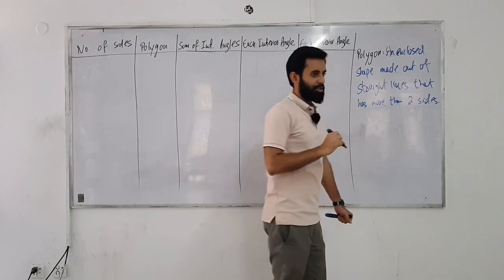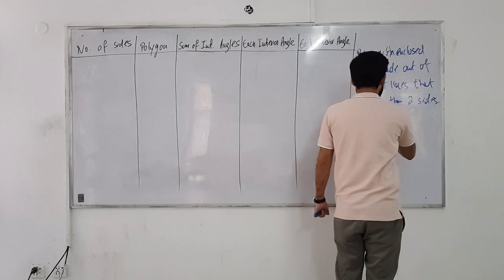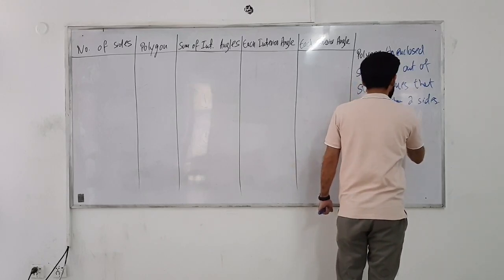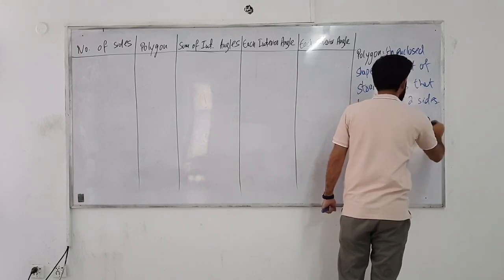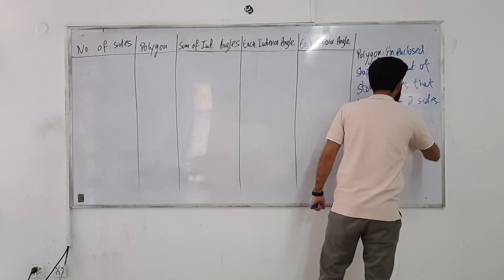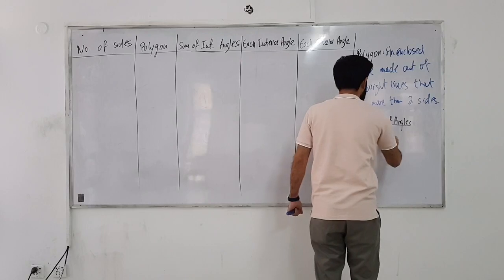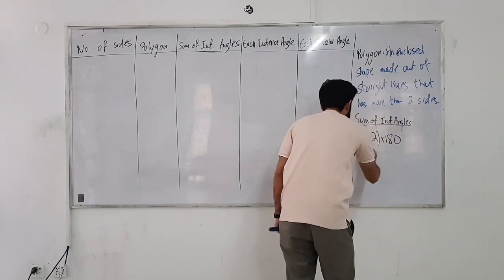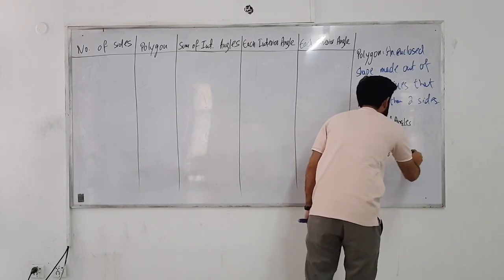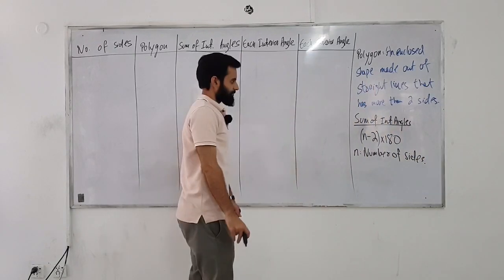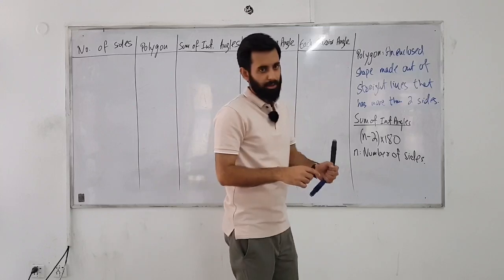The one formula that you need to know is how to calculate the sum of interior angles. The sum of interior angles, when we use the formula, it is n minus two times 180, where n is the number of sides. So how do you calculate the sum of interior angles of a polygon? n minus two times 180.